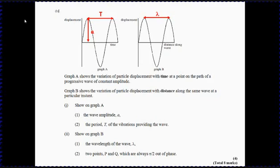And two points P and Q which are always pi by two out of phase. So what you've got to think here is the complete wave is 2π, so half the wave is π, so π by 2 is a quarter of a wave. So we need any two points a quarter of a wavelength apart. So if you start from the start there, if that's P, then we're looking for that point Q. Obviously any two points which are a quarter of a wave apart.